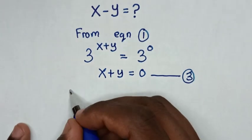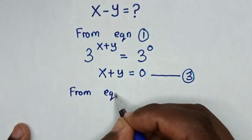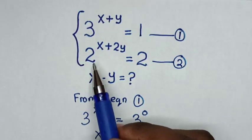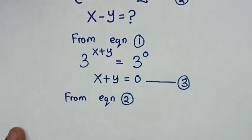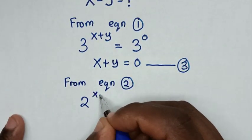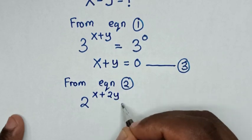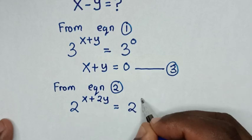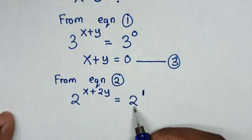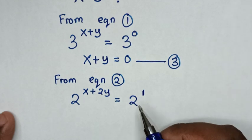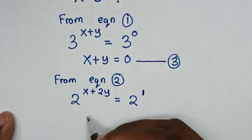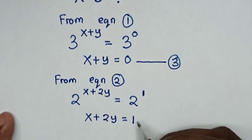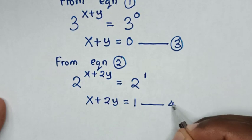From Equation 2, which is 2 to the power of (x + 2y) is equal to 2, and 2 is the same as 2 to the power of 1. Because we have the same base of 2, we compare the powers, so it will be x + 2y is equal to 1. We will call this Equation 4.